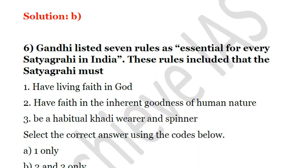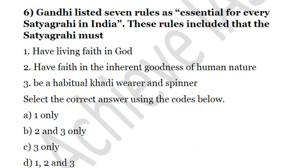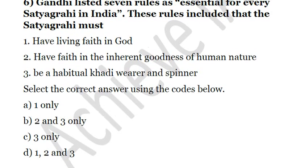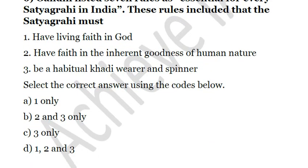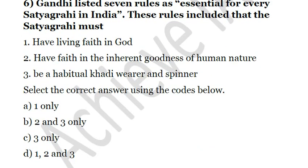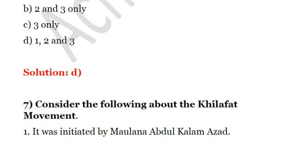Question 6: Gandhi listed seven rules as essential for every Satyagrahi. The rules stated a Satyagrahi must: first, have living faith in God; second, have faith in the inherent goodness of human nature; third, be a habitual Khadi wearer and spinner. All of these statements are correct. There were other rules also, mentioned in the explanation PDF. The answer is D: all of 1, 2, and 3.